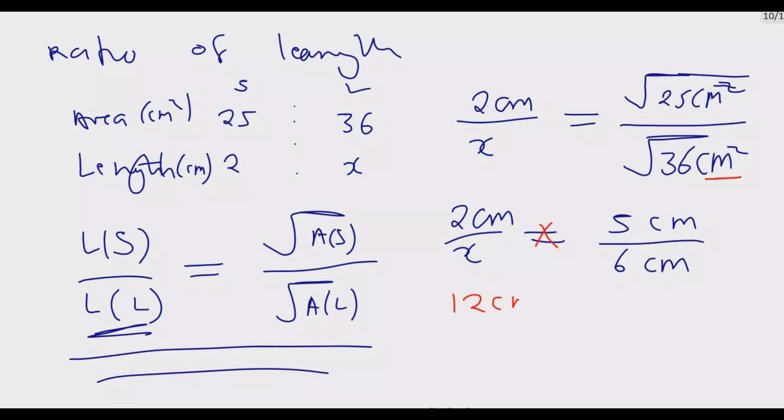We cross multiply: 6 times 2 equals 12 centimeters, and X times 5 equals 5X centimeters. We divide by 5 centimeters, so 12 divided by 5 equals 2.4 centimeters equals X. So X is 2.4 centimeters. This is how you answer this question.